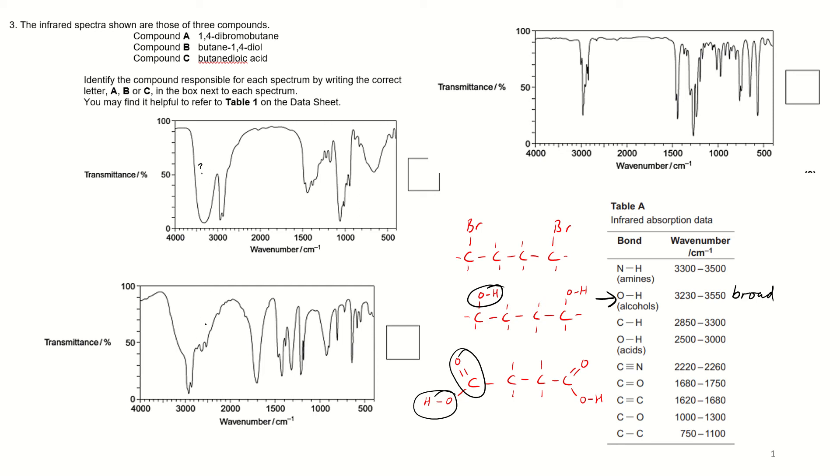We've also got a big broad peak here, so it could be this maybe. This one, definitely not across this region. This is just going to be a CH, that little sharp peak, you'll see, appears in all of them.